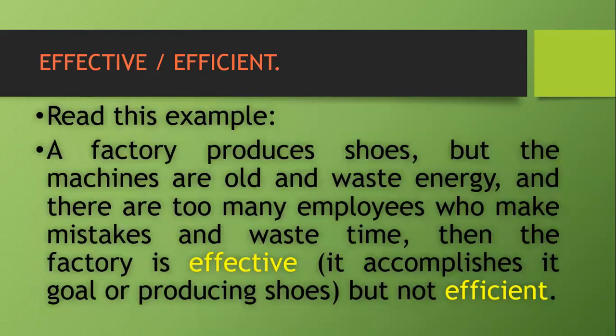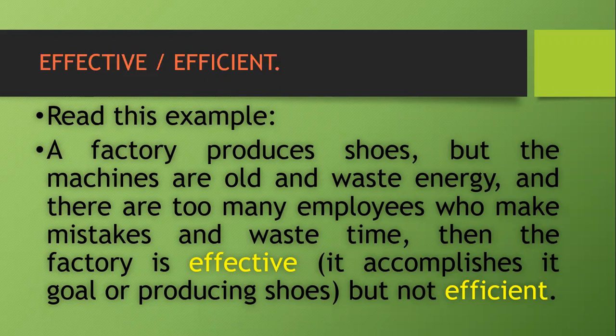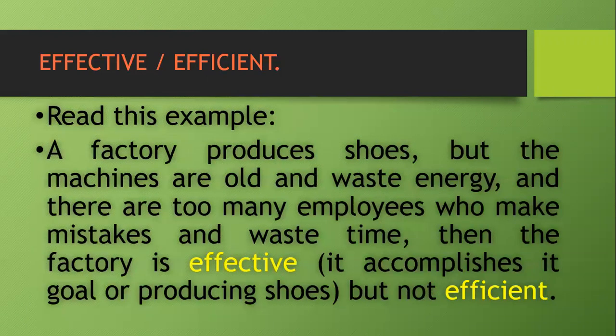For example, a factory produces shoes, but the machines are old and waste energy, and there are too many employees who make mistakes and waste time. Then the factory is effective. Why? Because it accomplishes its goal of producing shoes. But it's not efficient.